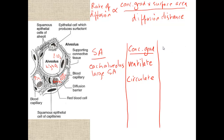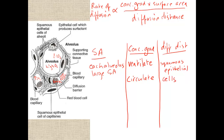The last factor is diffusion distance, which we want to be small. We achieve this by using squamous epithelial cells — thin and flat cells — so the barrier between the atmosphere and the blood consists of just two squamous epithelial cells, minimising the diffusion distance and ensuring a fast rate of diffusion.